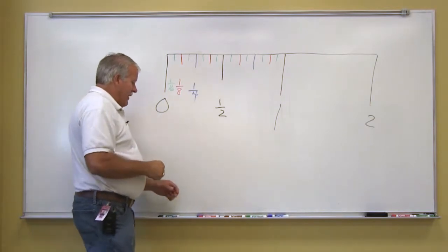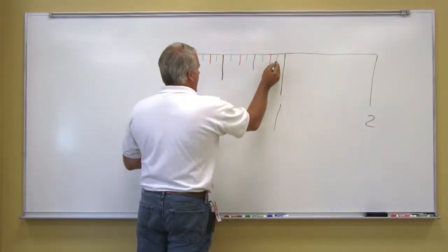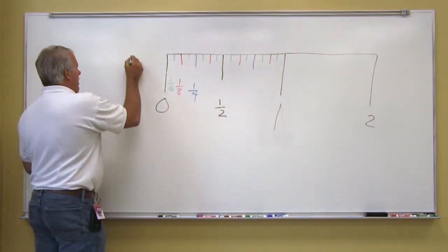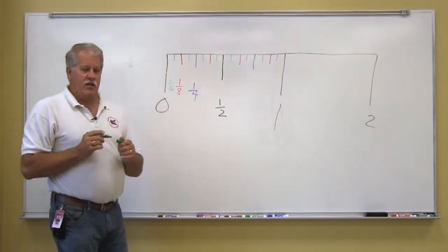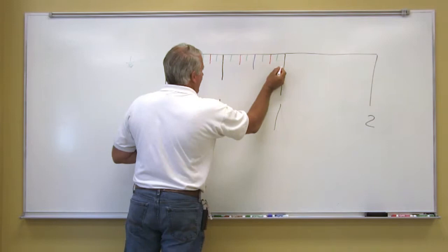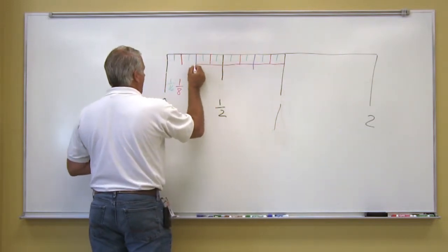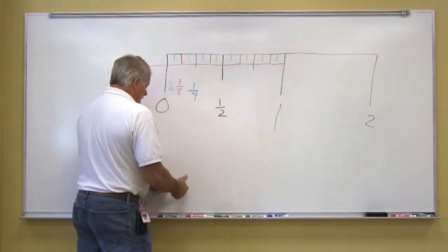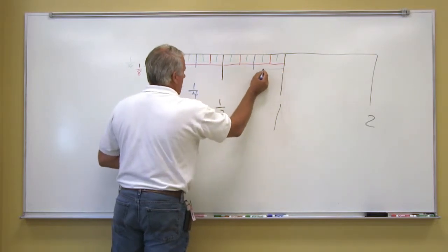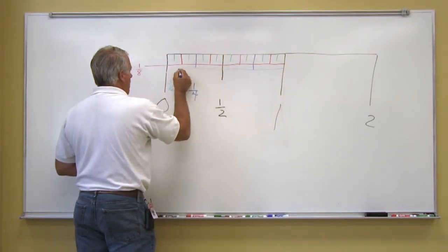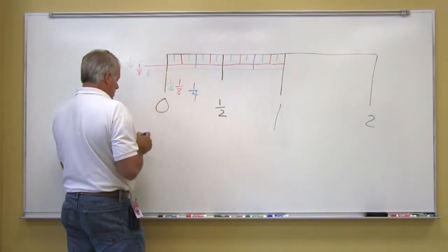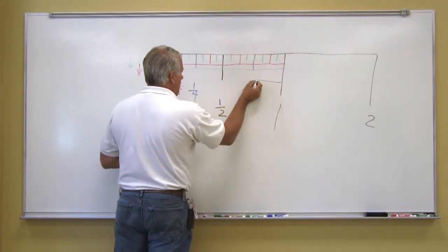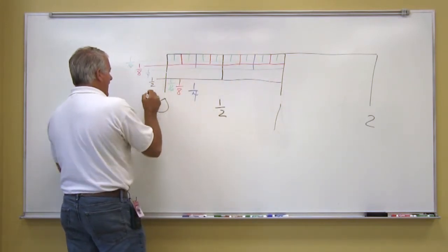So we've divided it up so that on this particular ruler, all the green marks, or all the marks that are that long, are sixteenth of an inch. All of the lines that are the length of the red line are eighth inch lines. All of the blue marks are the quarter inch marks. And then the black mark that's shorter than the whole is the half inch mark.